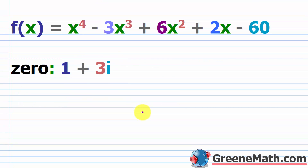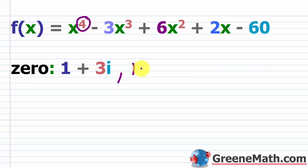The next type of problem: suppose f of x equals x to the fourth power minus 3x cubed plus 6x squared plus 2x minus 60, and we need to find all the zeros, given a complex zero of 1 plus 3i. The degree is 4, so we'll have four solutions. Since 1 plus 3i is a zero, there must also be a zero of 1 minus 3i because these come in conjugate pairs. Knowing two zeros, we can reduce to a quadratic and solve from there.